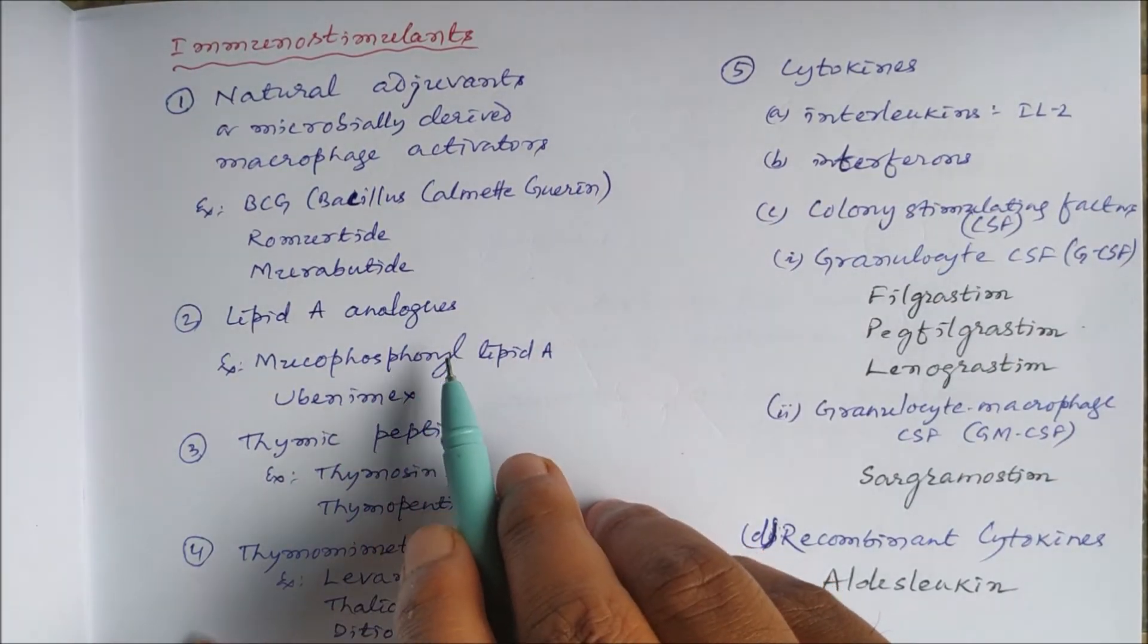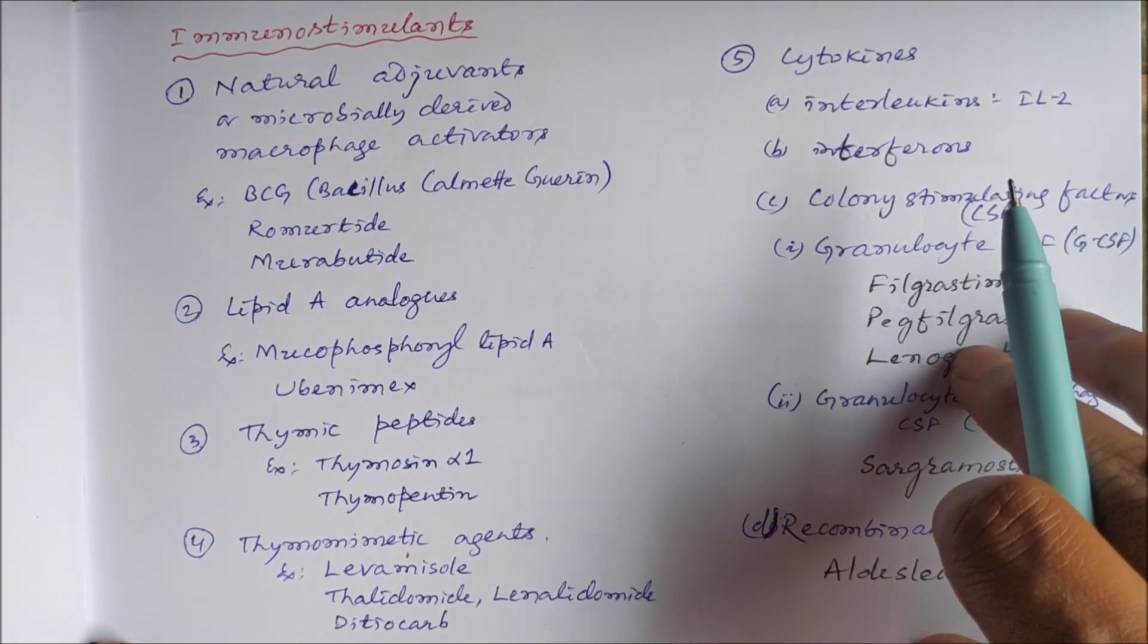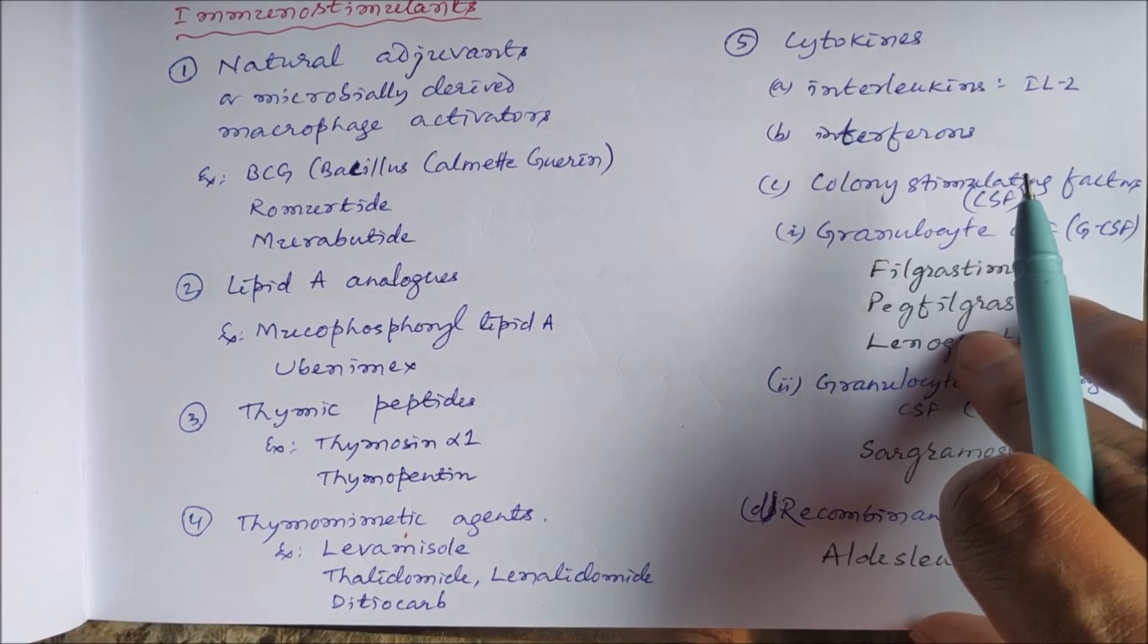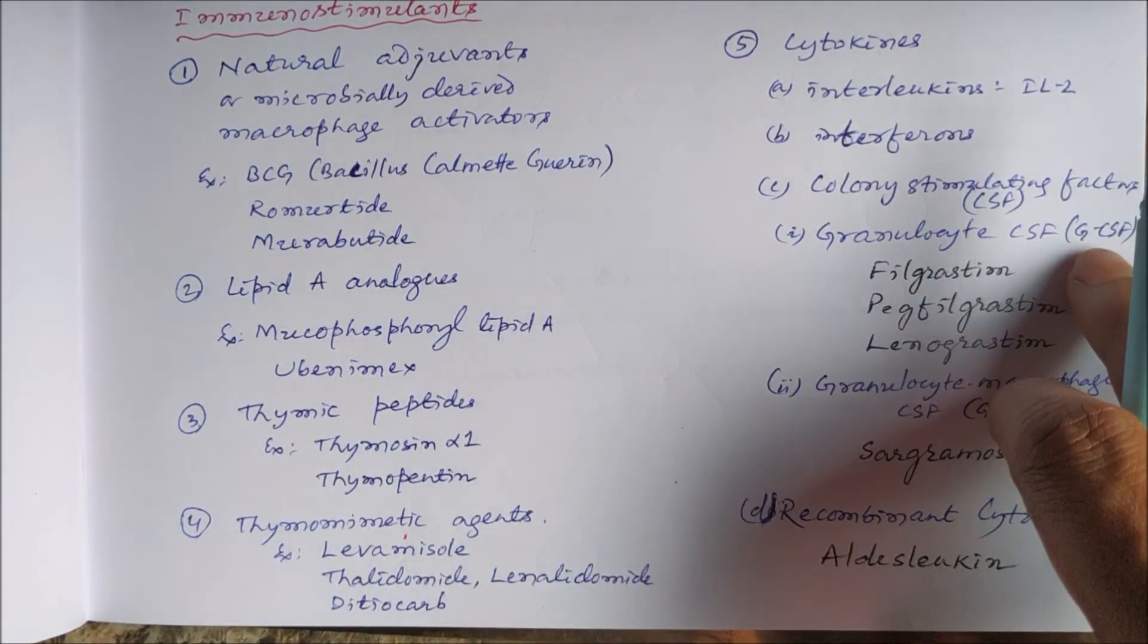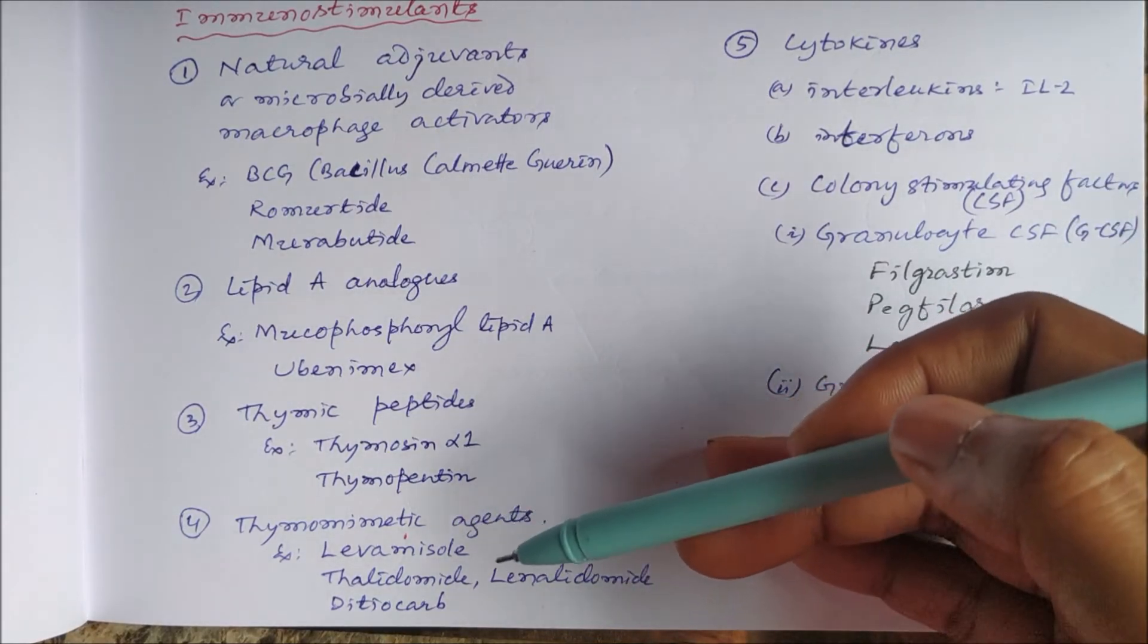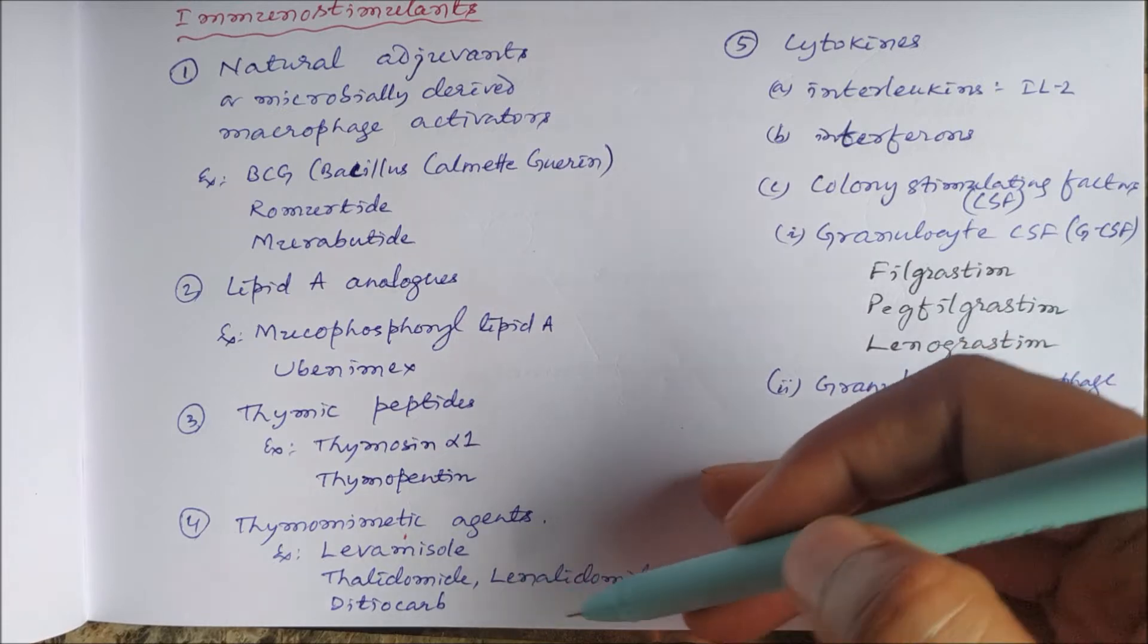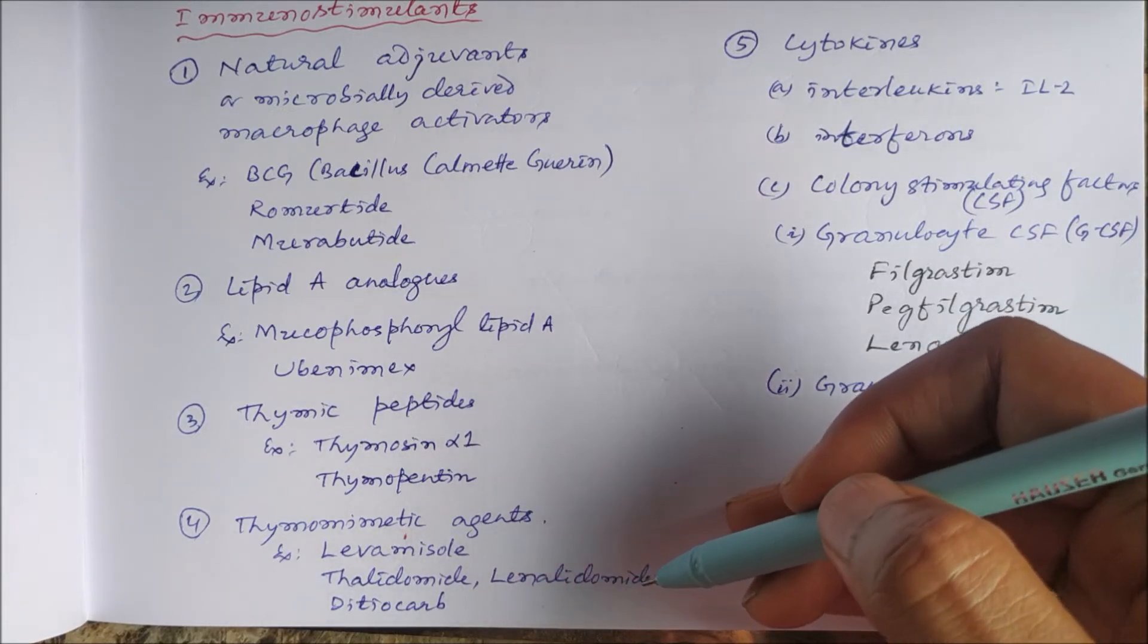Then the lipid A analogs like monophosphoryl lipid A, then evemanex. Thymic peptides like thymosin alpha-1 and thymopentin, and some drugs which stimulate the thymus gland, thymomimetic agents like levamisole, thalidomide, a derivative of thalidomide like lenalidomide, then dtocarb.